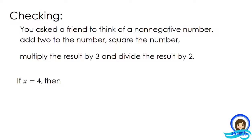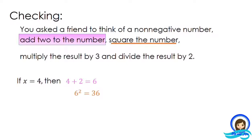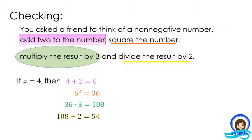Let's verify that 4 is really the original number by reversing the operations: 4 + 2 = 6; square it: 6² = 36; multiply by 3: 36 × 3 = 108; divide by 2: 108 / 2 = 54. Indeed, the result is 54, confirming the original number is 4.